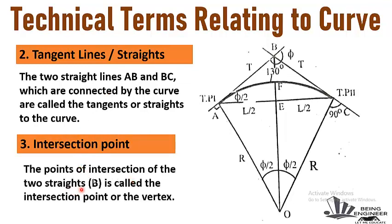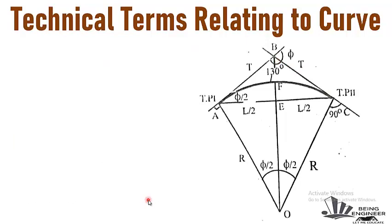The third term is intersection point. The point of intersection of the two straights, that is point B, where the two tangents or straights intersect each other, is called the intersection point or the vertex. It is also called the vertex.